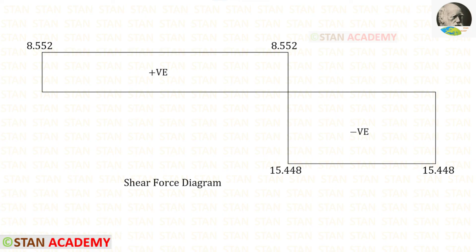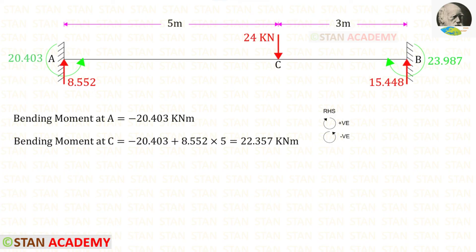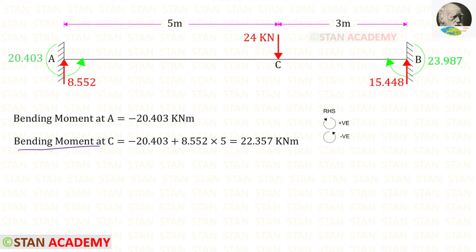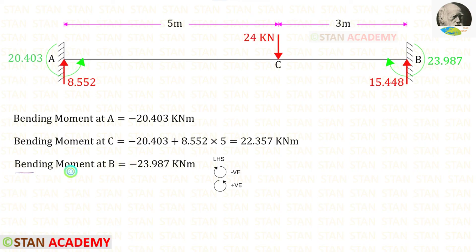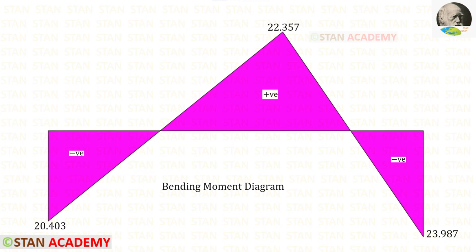Here you can see the shear force diagram. Now we are going to find the bending moment values at points A, C, and B. Using the right hand side rule: at point A, Ma is anti-clockwise so it will be negative. At point C, with Ma anti-clockwise (positive) at distance 5, the bending moment at C is 22.357. To find the bending moment at B using the left hand side rule, Mb is clockwise so it will be negative. Here you can see the bending moment diagram.